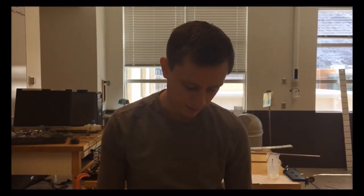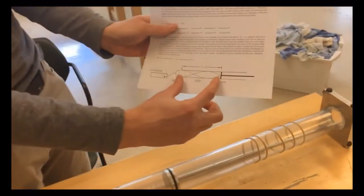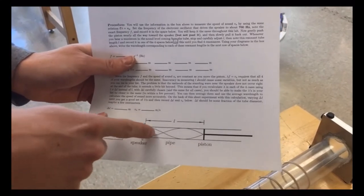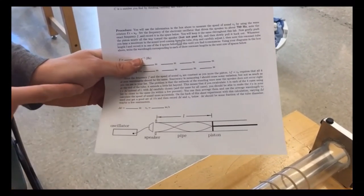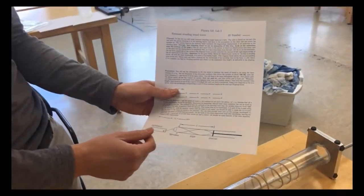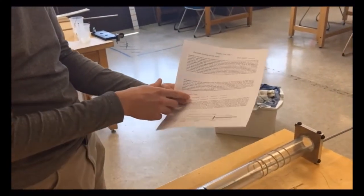You should have, in the beginning, drawn out what the waves would look like for the first four positions, in similar form as this. Based on that, you should be able to calculate the wavelengths.